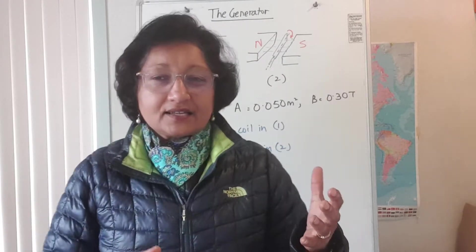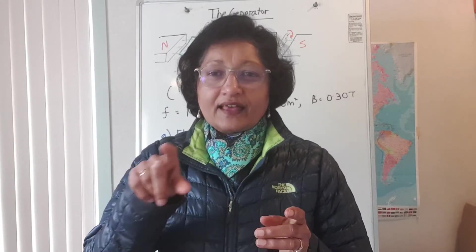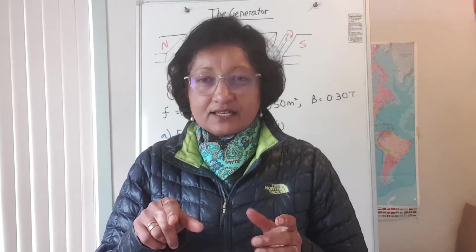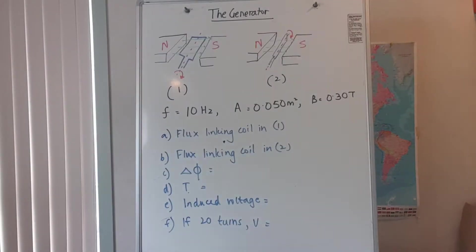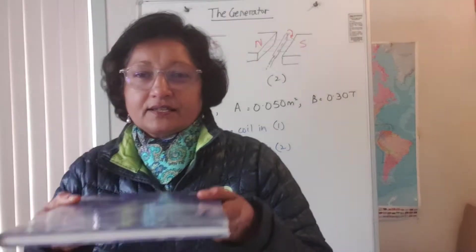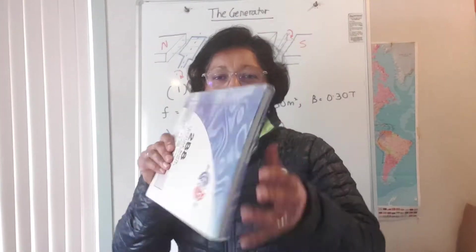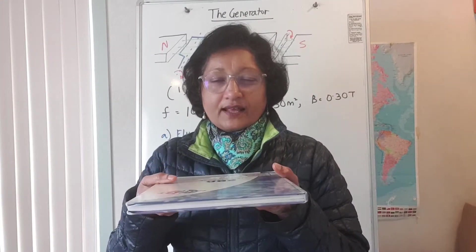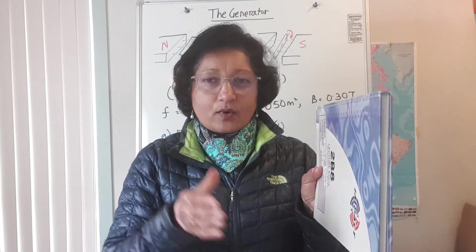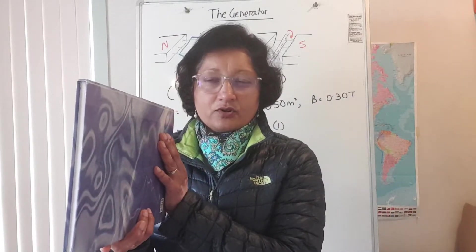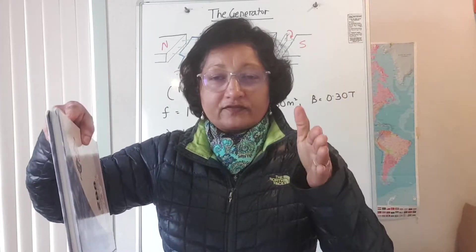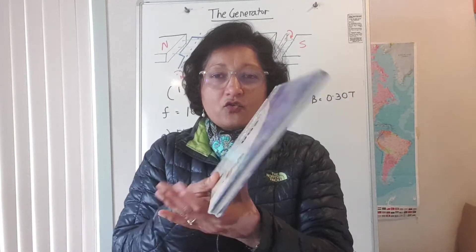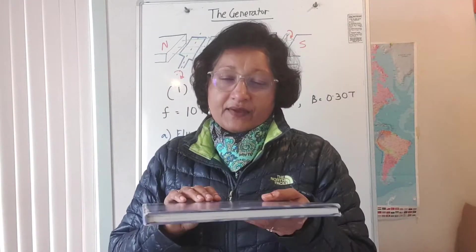We are looking at what an electric generator essentially is: a coil that is spinning in a magnetic field. It's a coil of wire, and you have the north pole of the magnet at one end and the south pole at the other, with a uniform magnetic field in between the poles, and this coil is spinning in that magnetic field.